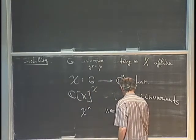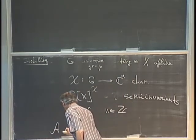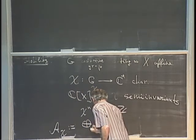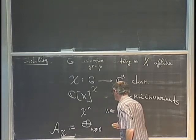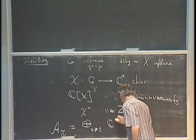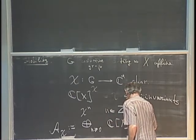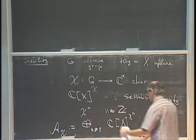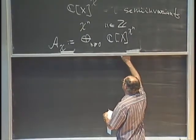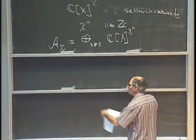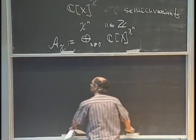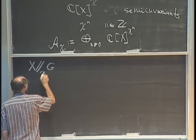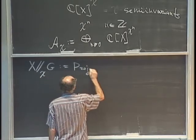We define a graded associative algebra A sub chi to be the direct sum over non-negative N of semi-invariants of weight chi to the N. This is a Z-plus graded algebra, and standard algebraic geometry tells us that whenever you have a non-negatively graded algebra, there is a scheme associated to it called Proj.